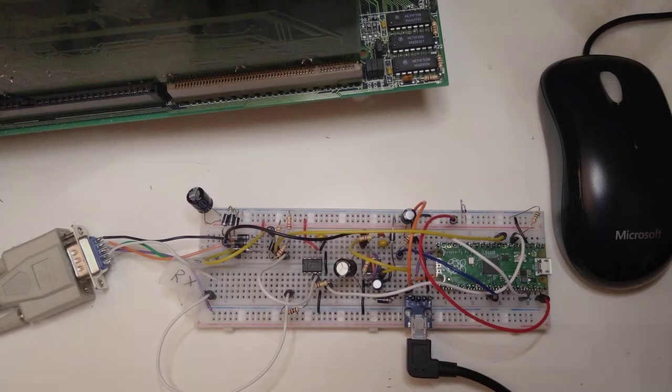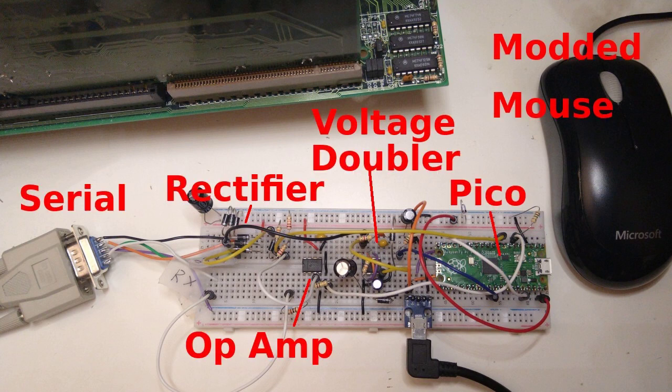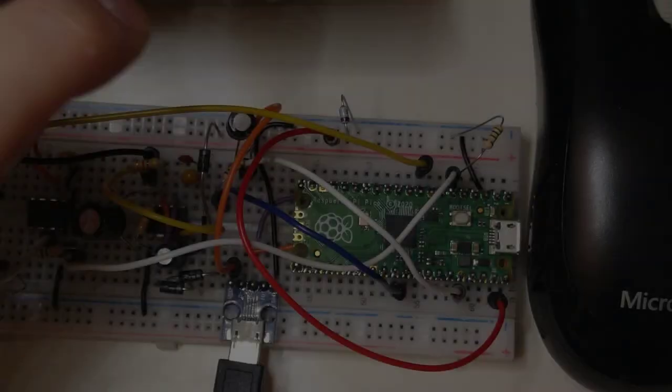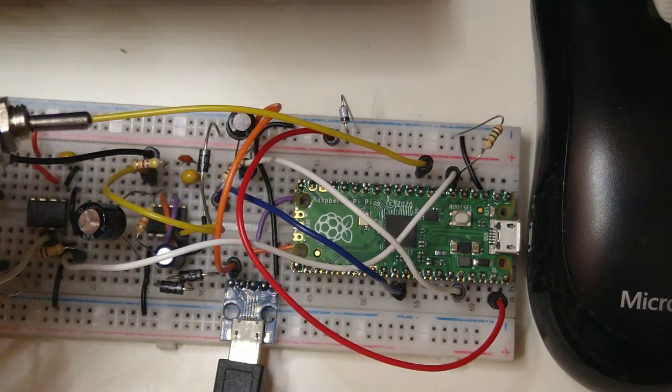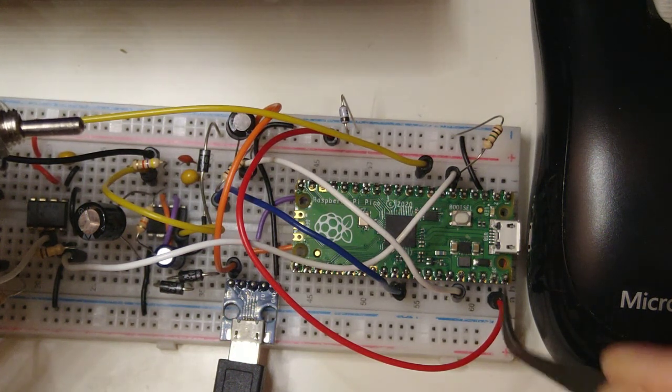Okay, let me show you the prototype. The prototype board is connected to the computer via the serial port, and to the mouse via the micro USB header. There is no external power whatsoever. After we turn the system on, the Pico should turn on after a short delay. We can tell that it's on by checking the LED.